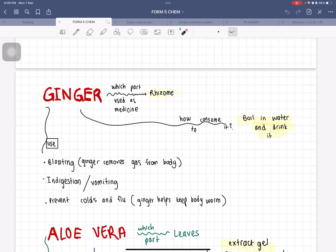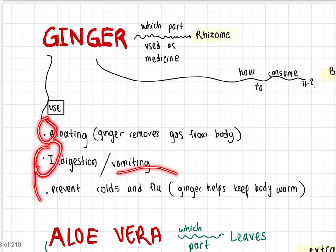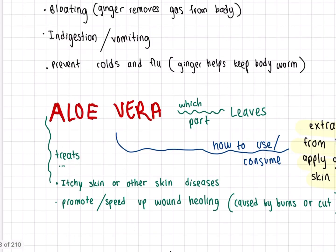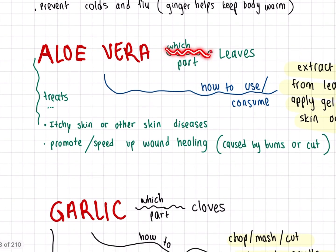For ginger, the part used as medicine is the rhizome. You consume it by boiling the ginger in water and then drinking the boiled ginger water. It helps with bloating, indigestion, or vomiting, and it also prevents cold and flu because ginger helps to keep the body warm.